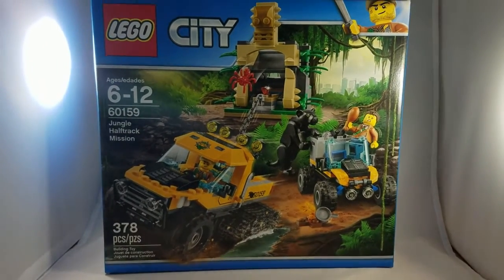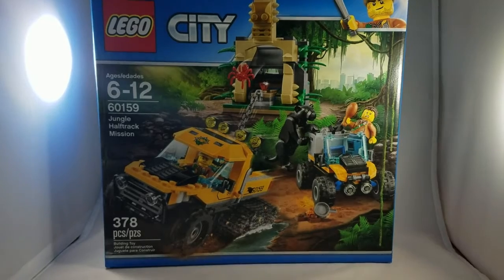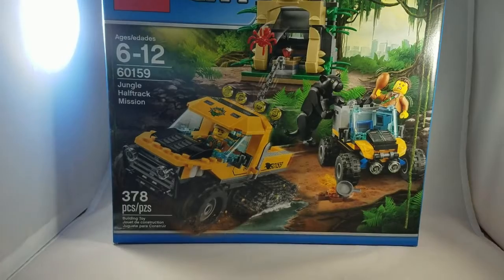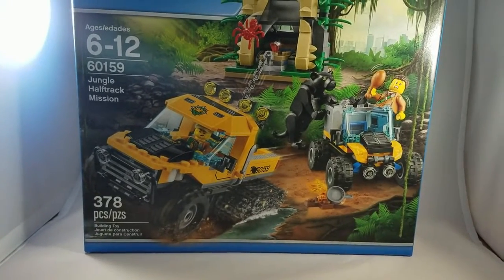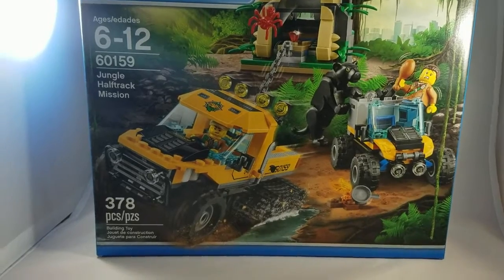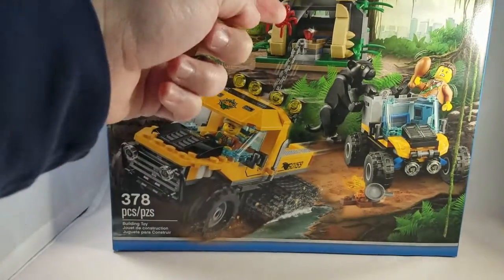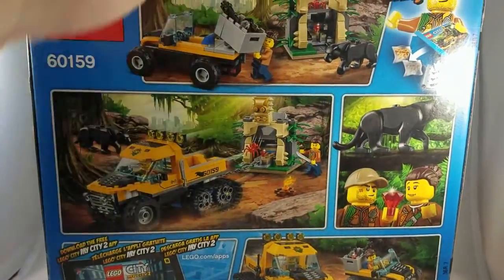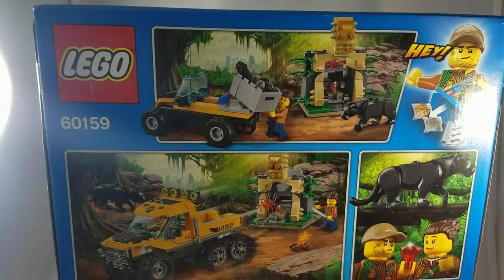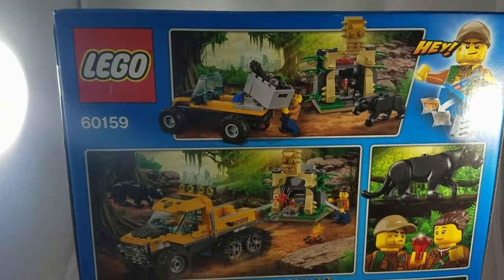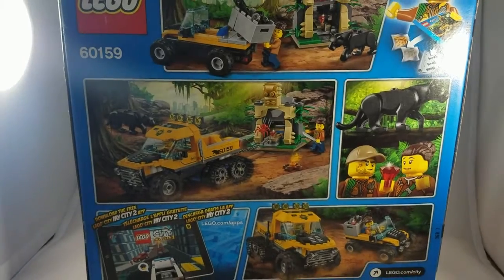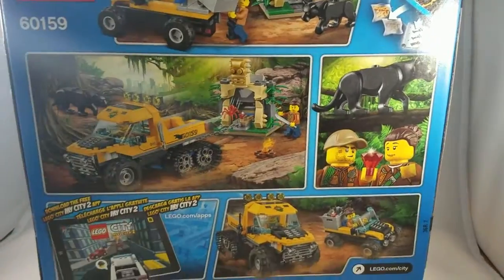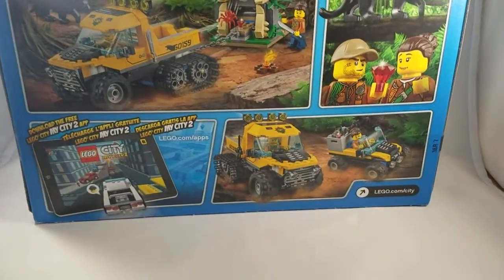All right, for today we have a review of the Lego Jungle Half-Track Mission set. This is set 60159 and it contains 378 pieces. As you can see from the front of the box, you're going to get a pair of vehicles and a little bit of a jungle shrine build. Flipping it around, the back shows off some of the play features including the puma, and you can attach a chain to this little build and rip the ruby out and race away with your treasure.